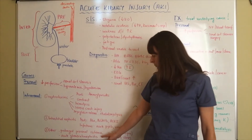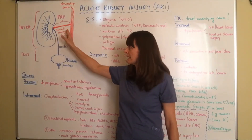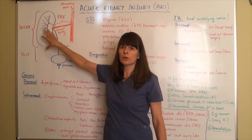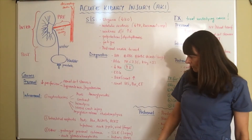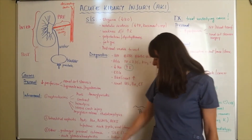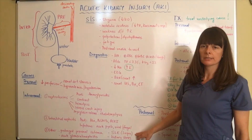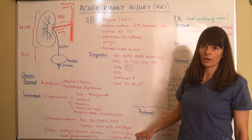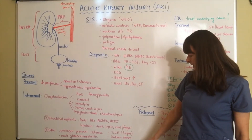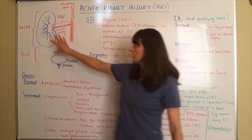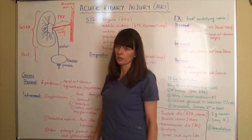Other intrarenal causes include prolonged pre-renal ischemia — if the renal artery is not delivering enough blood, eventually pre-renal failure will lead to intrarenal failure. Acute glomerulonephritis and SLE (systemic lupus erythematosus) — an autoimmune disease with adverse effects on the kidneys — can also lead to intrarenal failure, as can kidney stones clogging the kidney's filtration system.